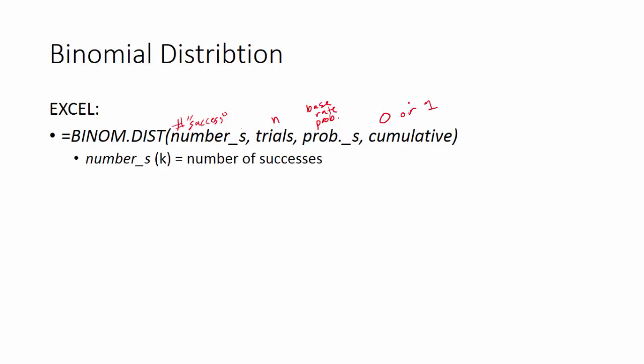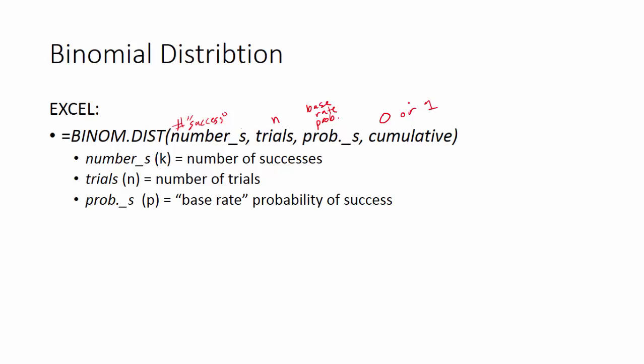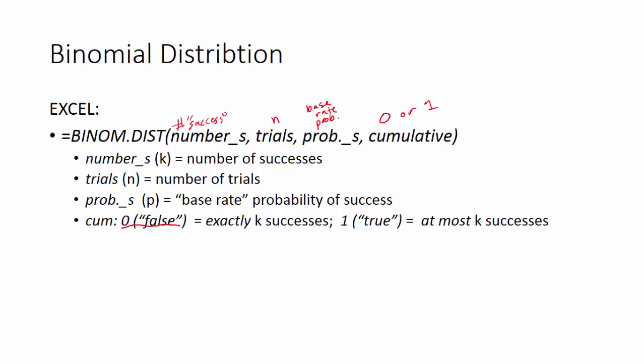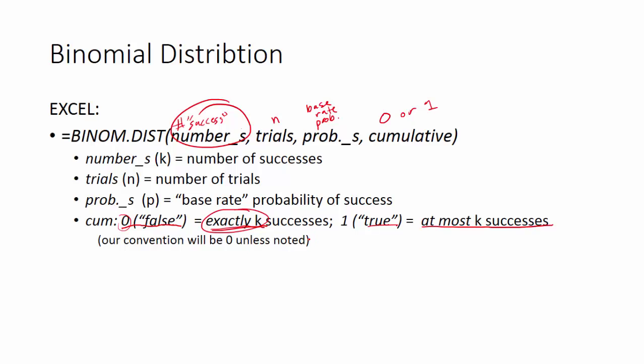The cumulative argument takes zero or FALSE for exactly k successes — what's the probability of getting exactly that many — or one or TRUE for less than or equal to that many successes. For most cases we'll use zero (exact), but there are a couple where we'll use the cumulative version.